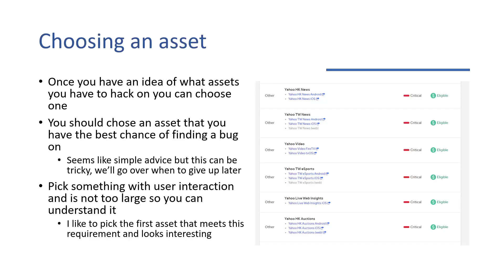So once you have your recon done and you've chosen your target, you really want to have an idea of the assets you can hack on before you start — whether that's notes or just you poking around finding the first one you see. Once you have an idea of what assets you have, you can choose one. You should choose an asset that you have the best chance of finding a bug on, like I discussed before. This seems like really simple advice, but it can be really tricky — and I'm going to go over where to give up.